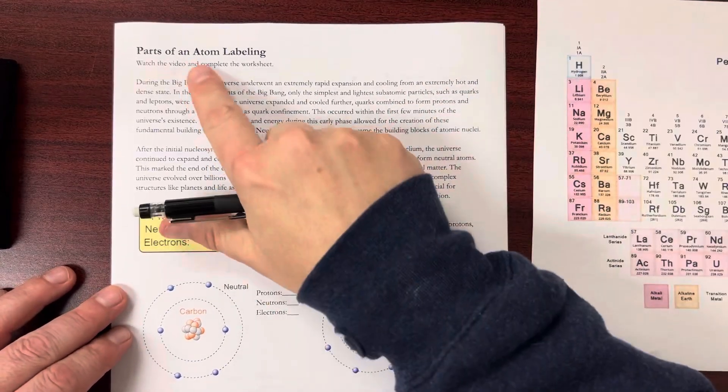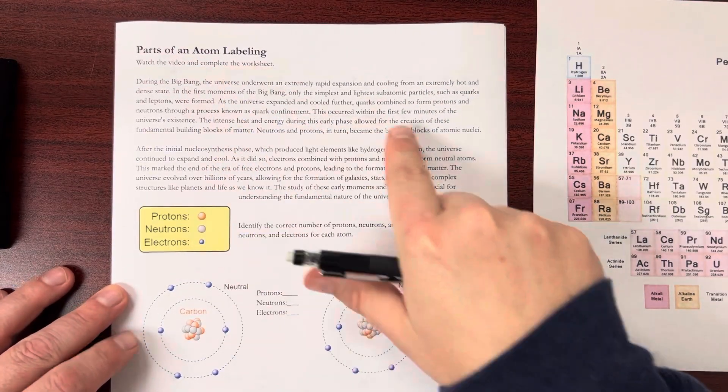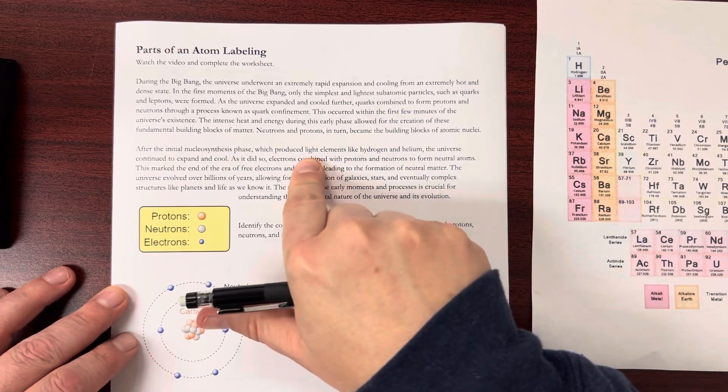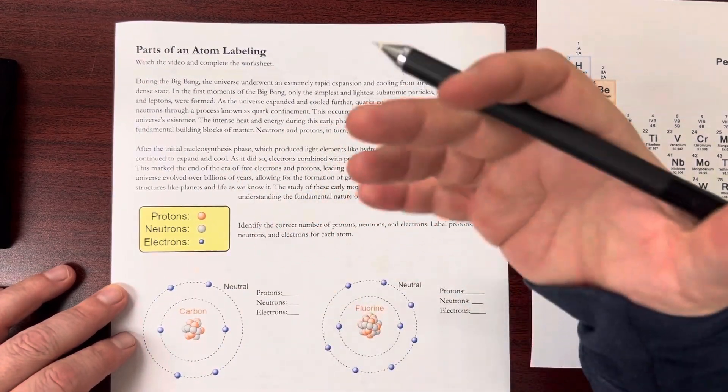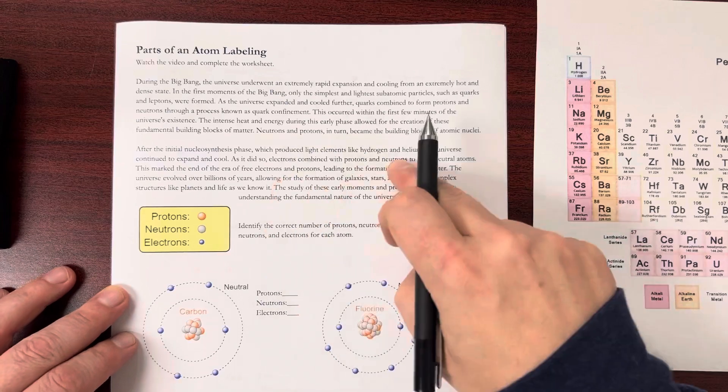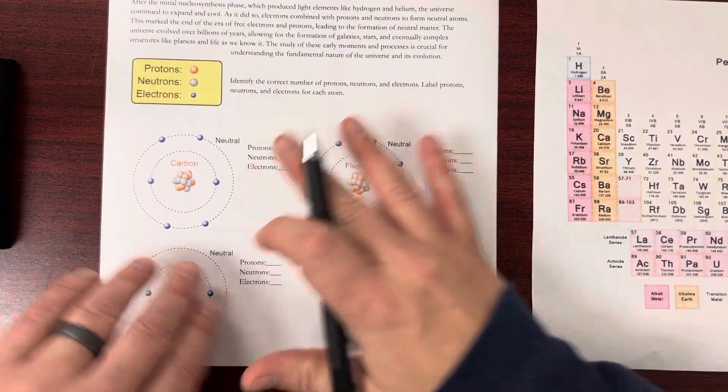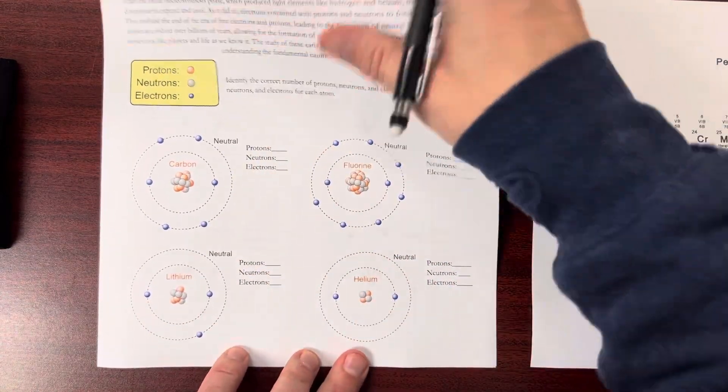Hello. Today I'm going to go over parts of an atom labeling. I'm relating this to the Big Bang and when matter first formed. So that's what it talks about up here a little bit. But down here and on the next page we have several atoms.